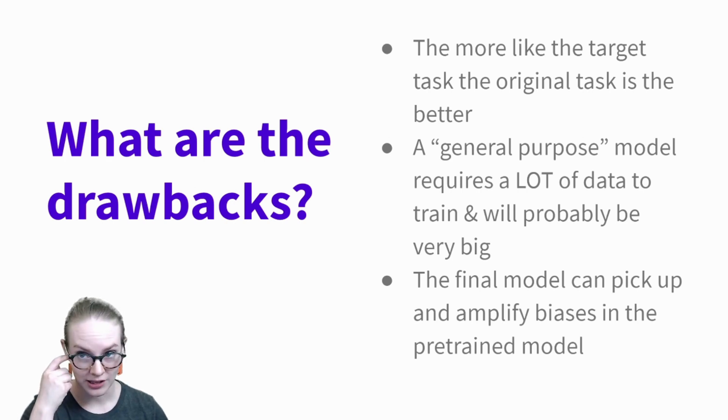There are some drawbacks, however. So a big one is that transfer learning tends to work best the more like your current task the task the model was initially trained on. There is kind of a way to get around this, and that's by training a model that does an enormous variety of different things or has seen a large amount of different data and is sort of general purpose.